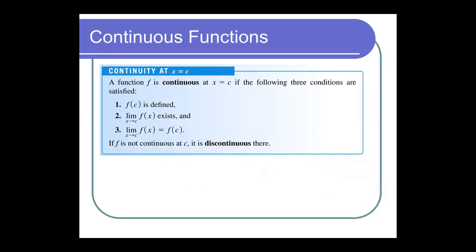You do need to know this definition. A function f is continuous at x equals c if the following three conditions exist: first, f(c) is defined; second, the limit as x approaches c of f(x) exists; and third, the limit equals f(c). If they're different, it's going to be discontinuous.